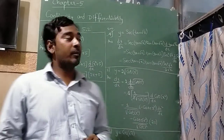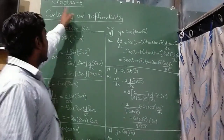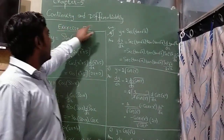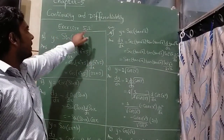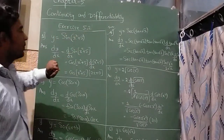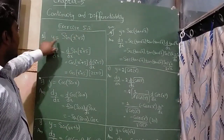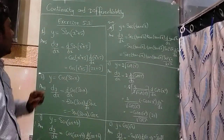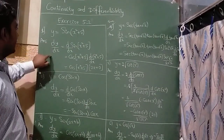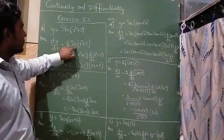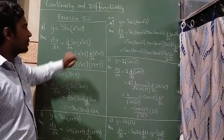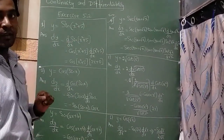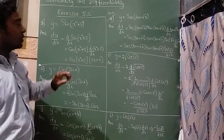Hello everyone, today I am going to teach chapter number 5, that is Continuity and Differentiability, Exercise 5.2. The first question is y is equal to sin(x² + 5). So dy/dx is equal to d/dx of sin(x² + 5). We don't have a direct formula for this, so we are going to apply chain rule.